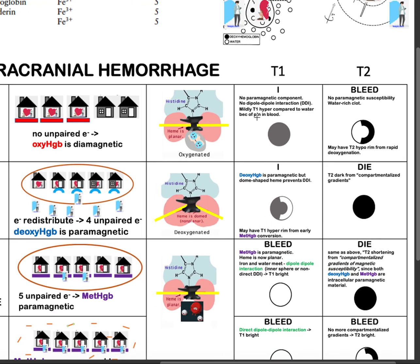Starting with oxyhemoglobin: it has no unpaired electrons, so electrons are happy with no interest for dipole-dipole interaction. The clot is water-rich with a little bit of protein secondary to the blood content, so it is T1 iso-intense. It exhibits no paramagnetic susceptibility since it is diamagnetic and has water in it, so the clot has increased T2 signal intensity — iso-bright.